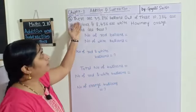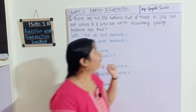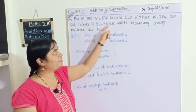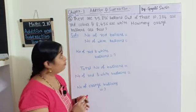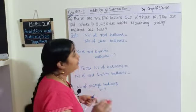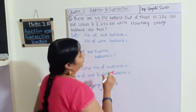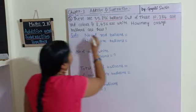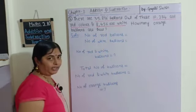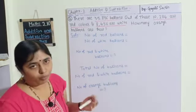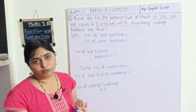Let's see the second problem. There are 35896 balloons. Out of these, 10284 are red color and 8456 are white. How many orange balloons are there? The total number of balloons is 35896. Out of these, 10284 are red and 8456 are white, and the remaining balloons will be orange.